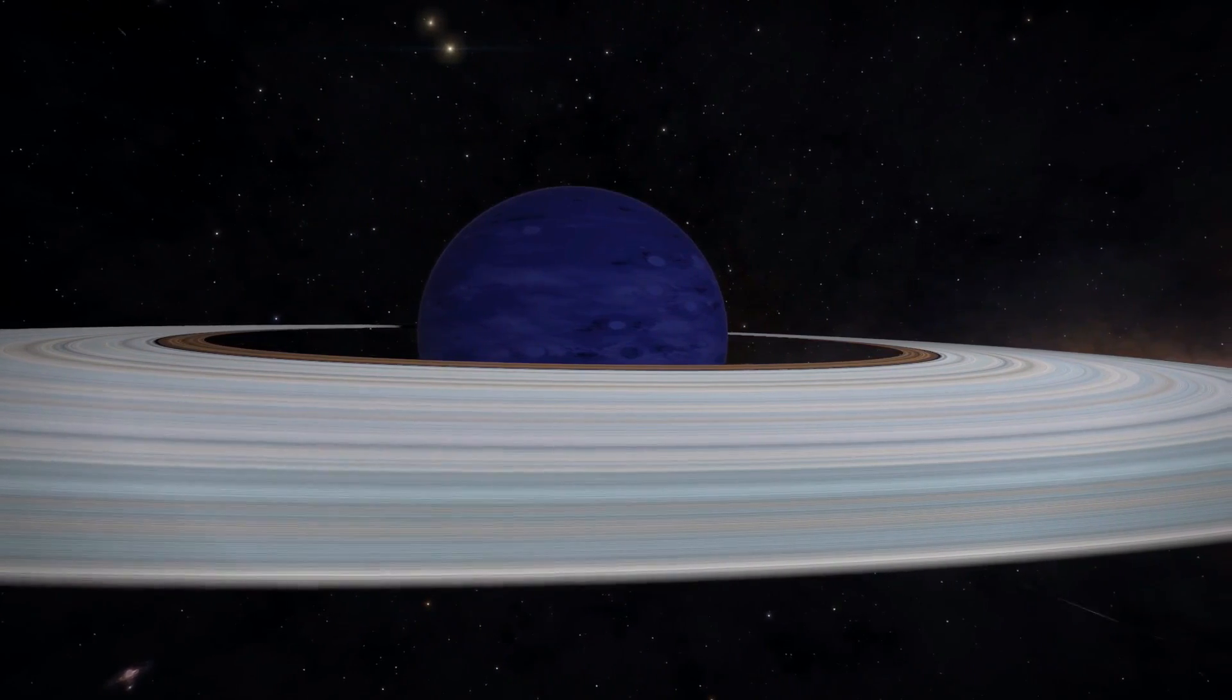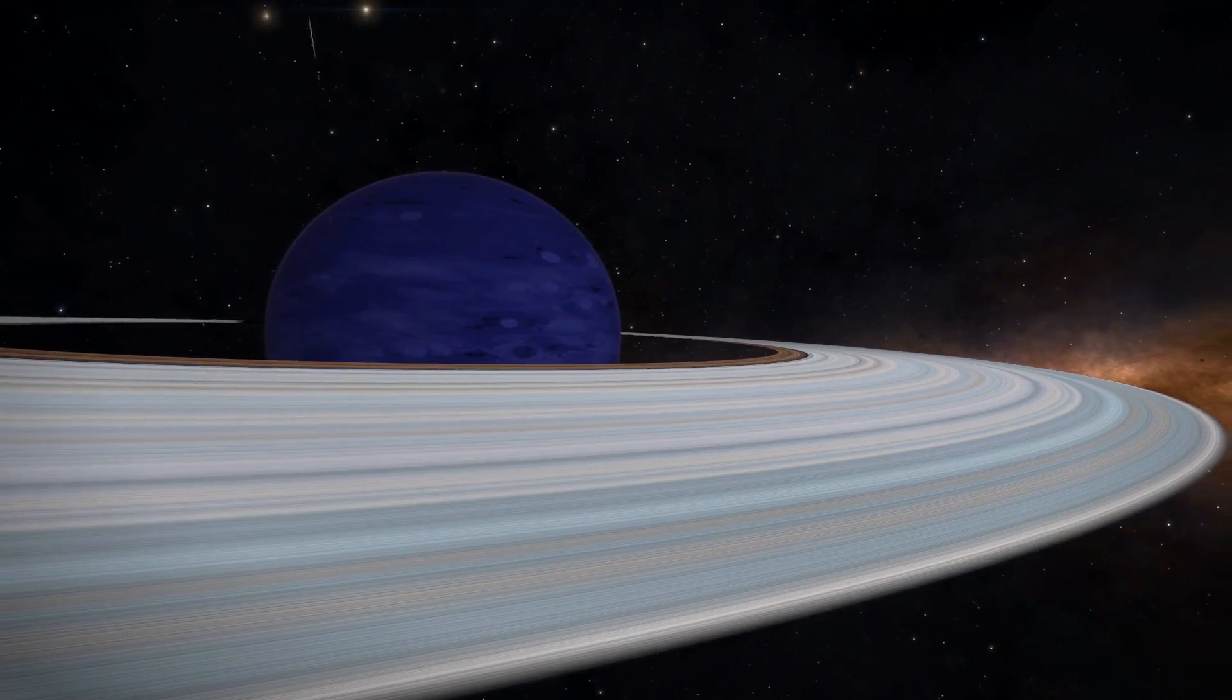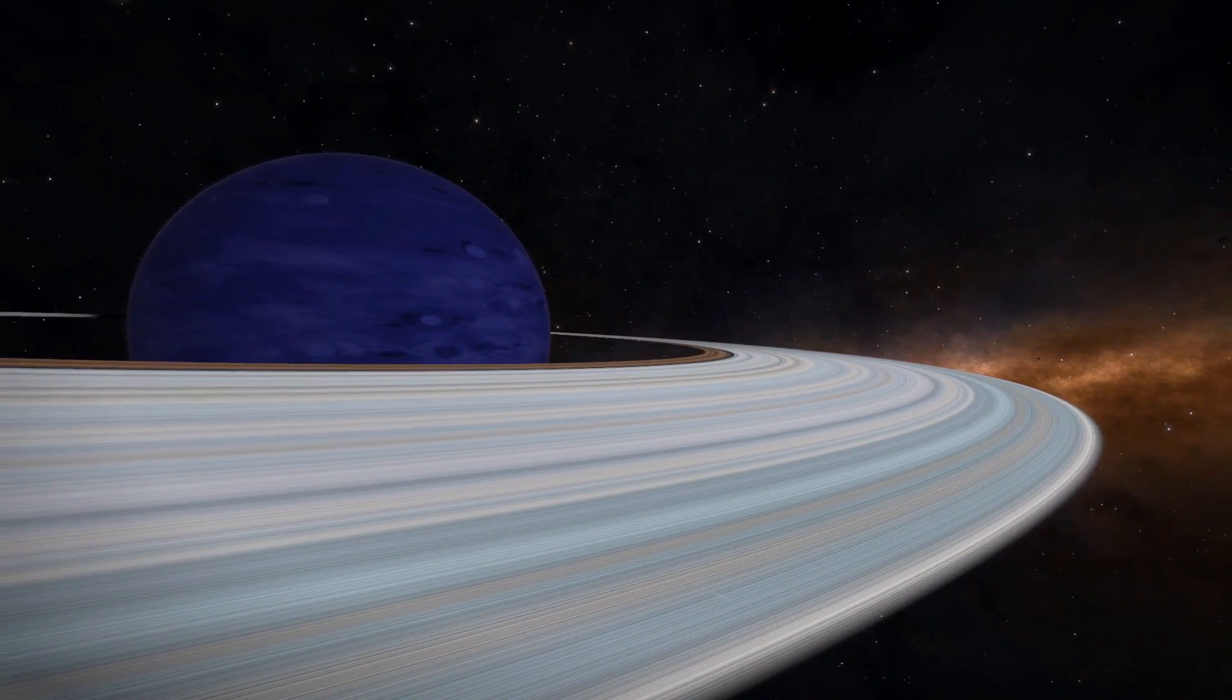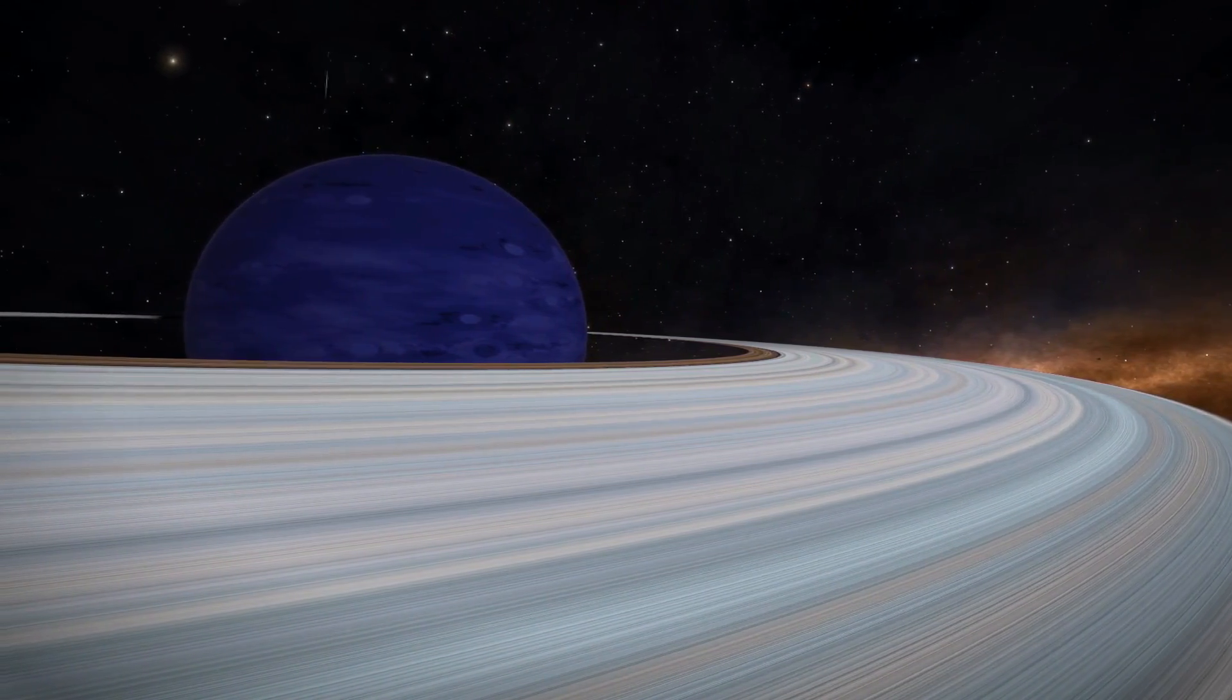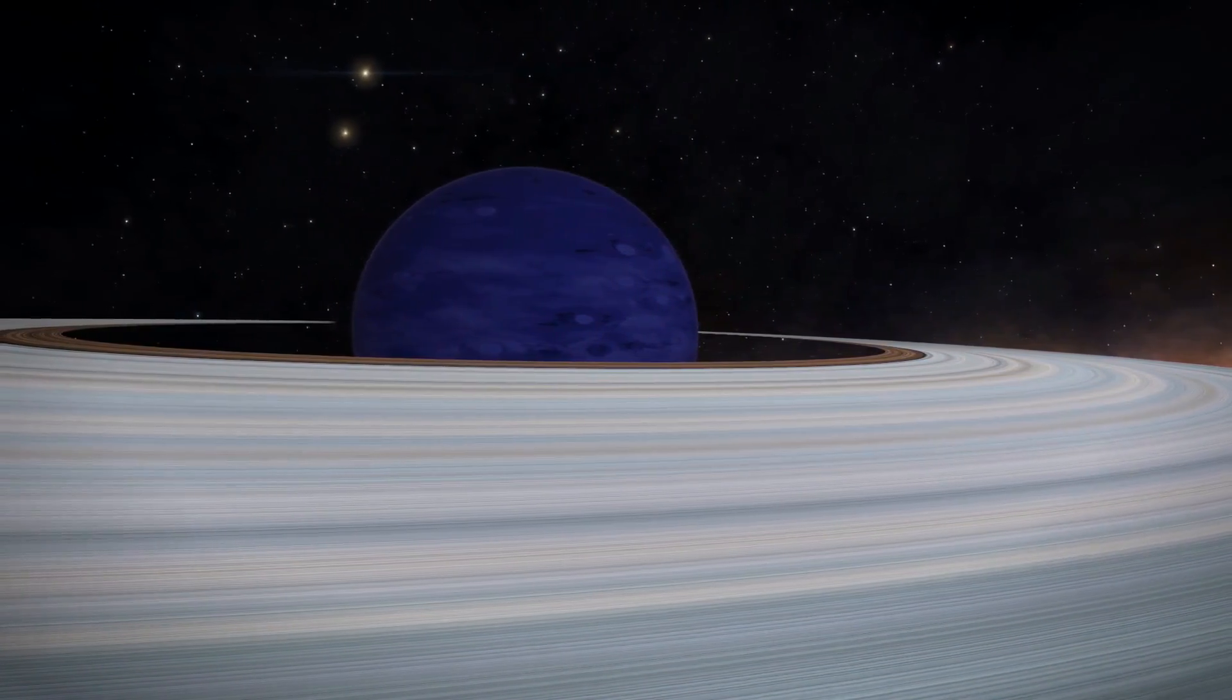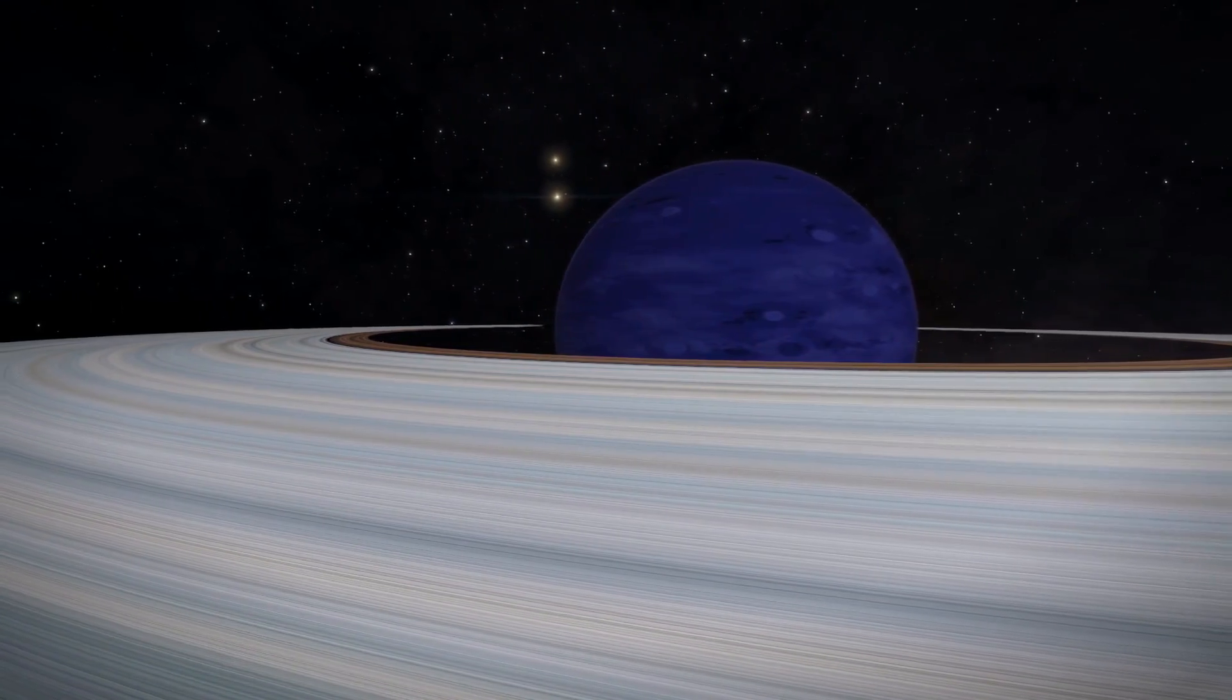I talked about Saturn and Jupiter in a recent video and we all know the iconic rings of Saturn and to a degree Uranus and Jupiter, but we see them from an unusual distance and unusual illumination and they're quite different when you get up close to them.